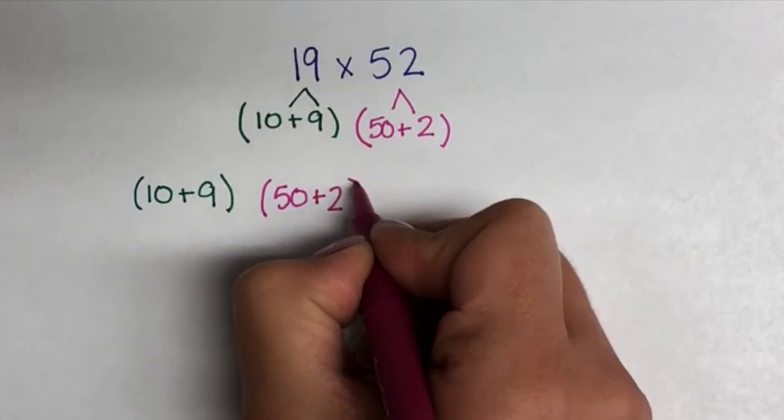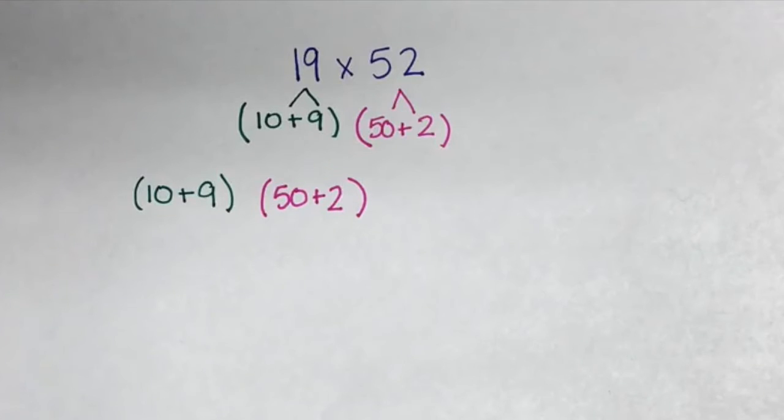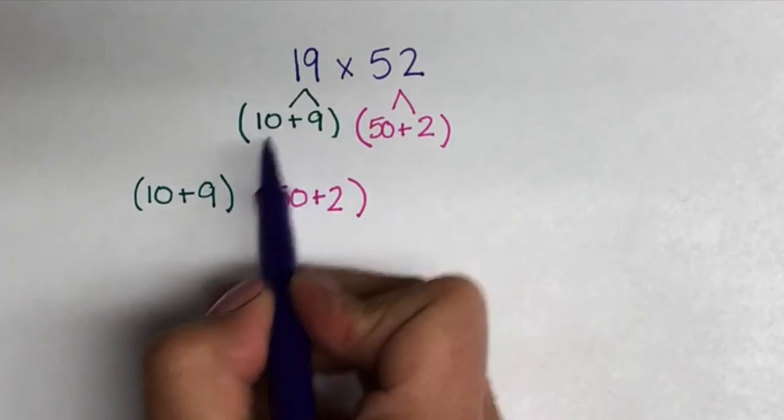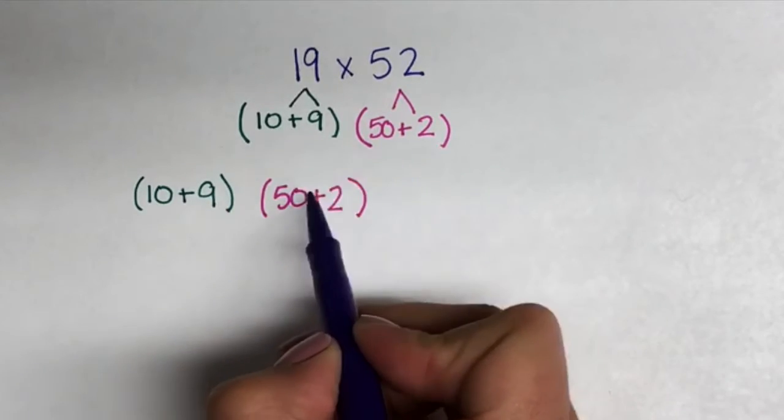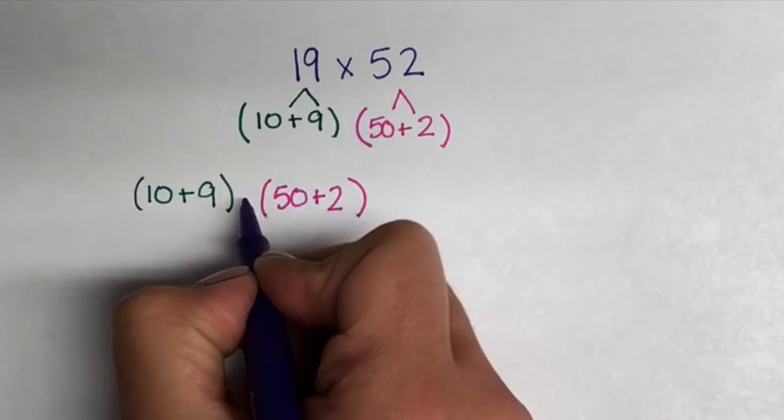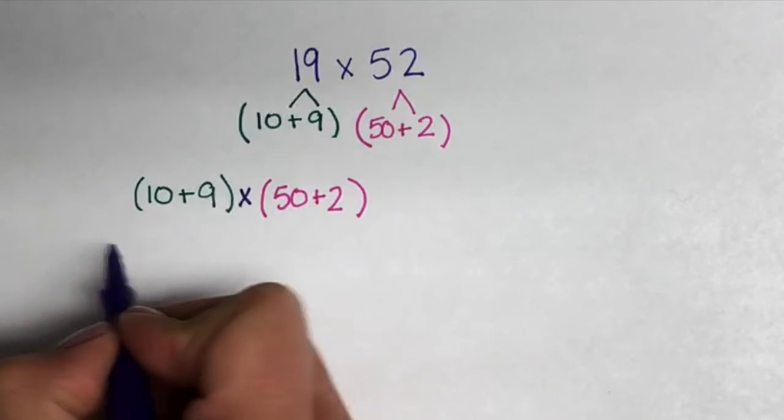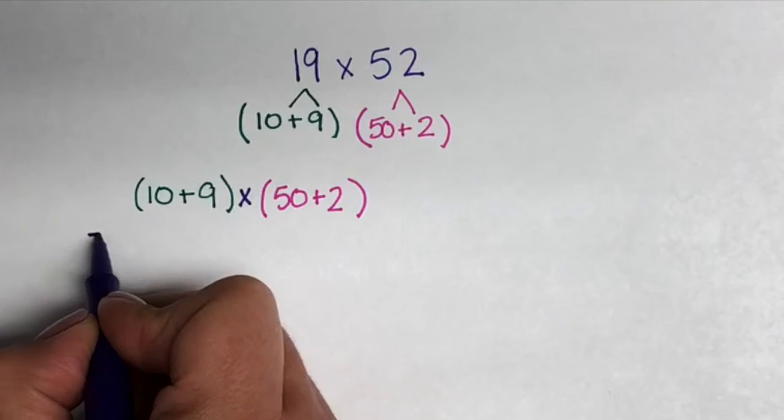Inside the parentheses we have an addition sign because that is how you make the numbers, but in between the two numbers we are going to put a multiplication sign because these two factors need to be multiplied together.